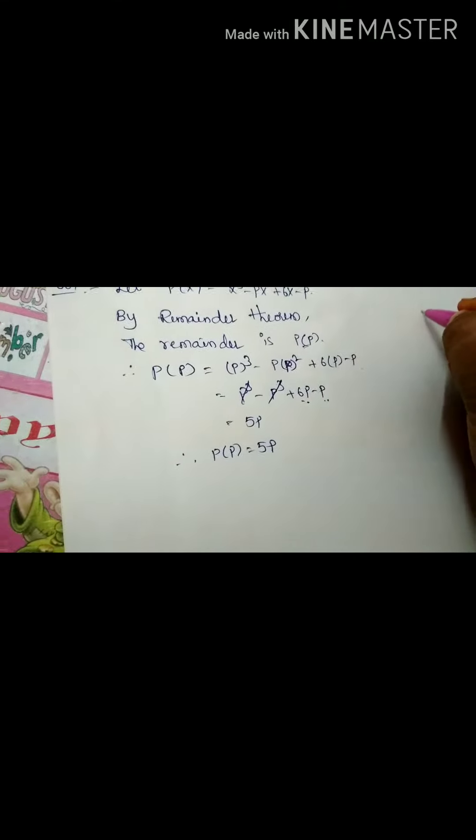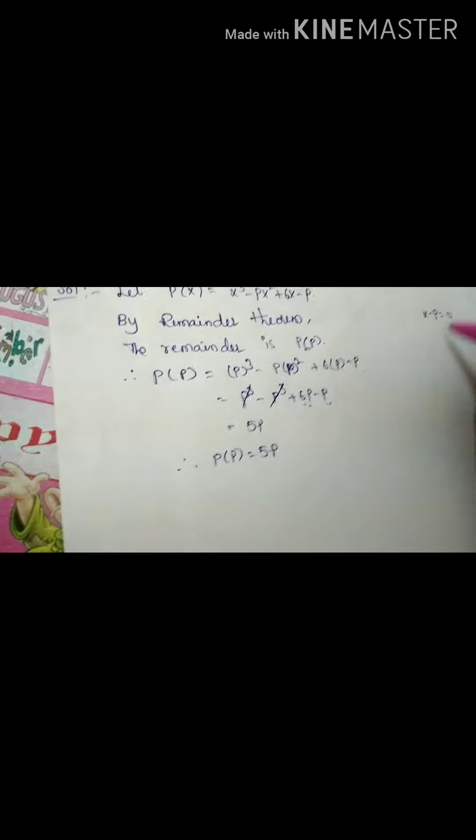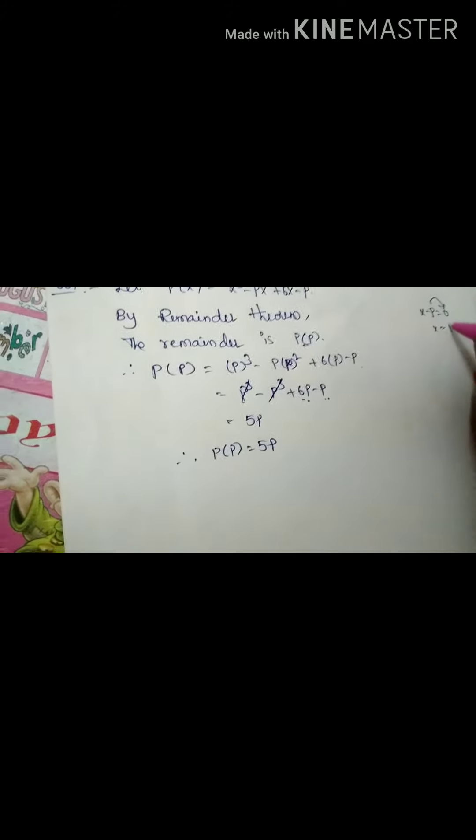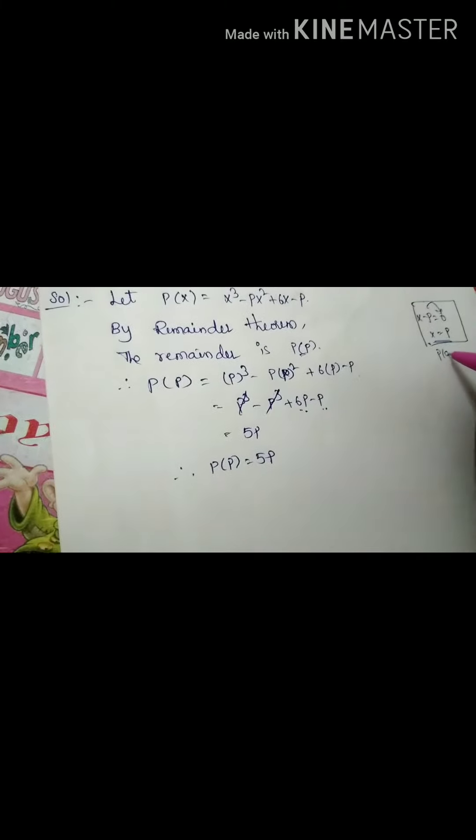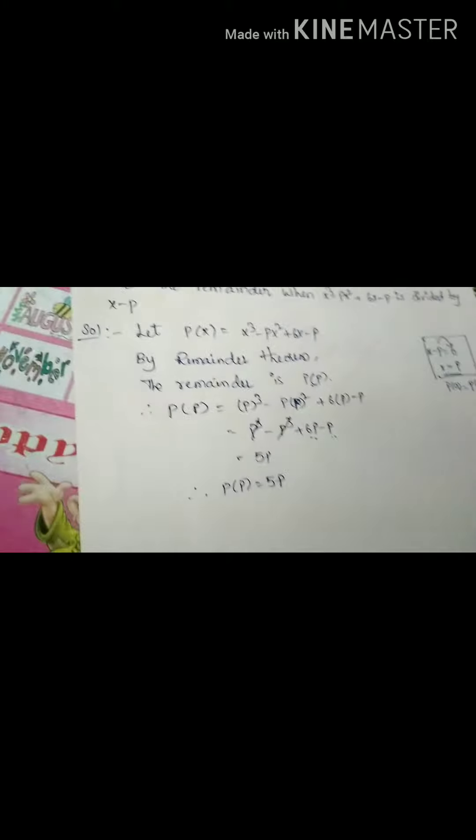Okay. How? So once again write in the rough side x minus p is equal to 0. Transposed p from other side becomes plus p. That's why p of a is equal to p of p. Thank you.